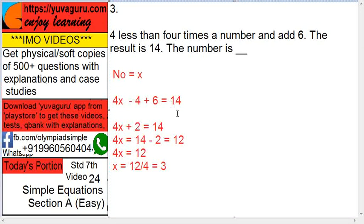Now take 2 on this side. It becomes 4x equals 14 minus 2 equals 12. So 4x 12, x equals 12 upon 4. 4 on this side, it will become, here it is multiply 4 into, it will become divide, so 12 upon 4. 4 ones of 4, 3, x equals 3. The number is 3.